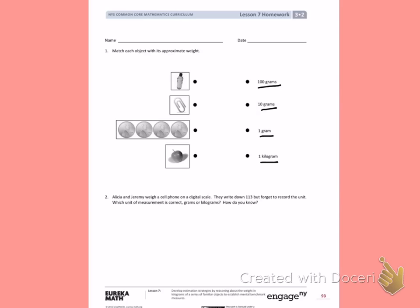I remember that a paper clip was about the weight of 1 gram. Pennies are also a small amount of weight, so I would say the pennies would be 10 grams.